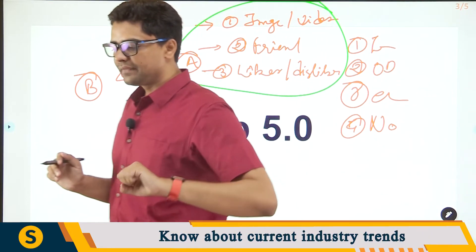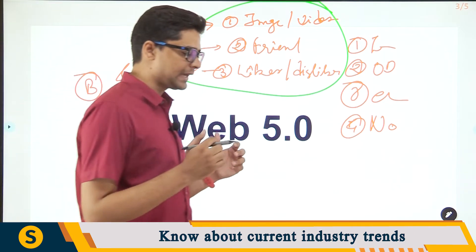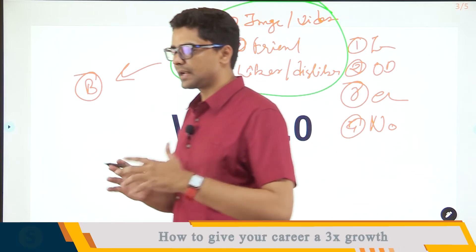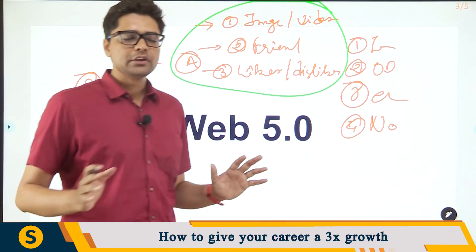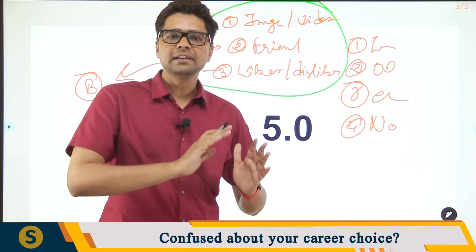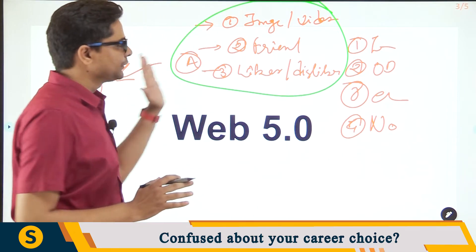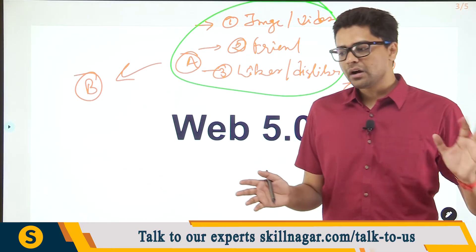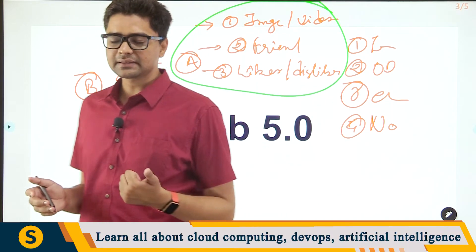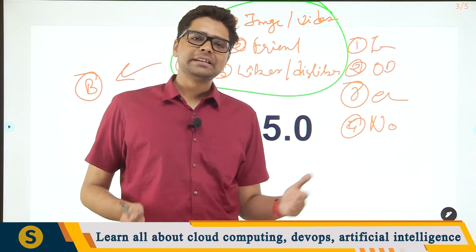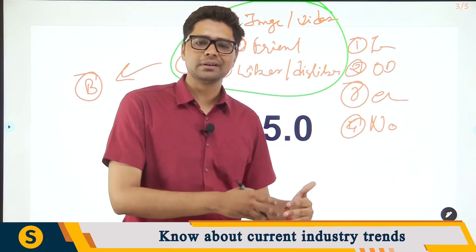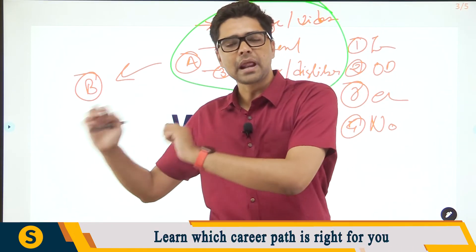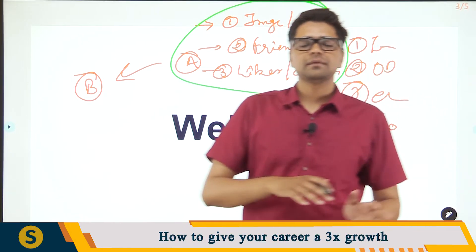In simple terms, Web 5.0 gives you the option of creating an identity that stays with you, stored in your personal wallet location. You will be able to take your identity from one platform to another, and all associated data can be transferred seamlessly. Right now, switching from Instagram to a new social network means creating a new account and rebuilding your connections. With Web 5.0, you take your identity and all your information across platforms without starting over.